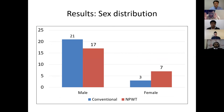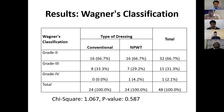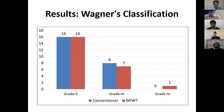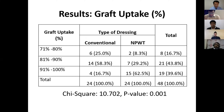According to Wagner's classification, this is how patients were diagnosed. More patients belong to Grade 2, with 16 members in Grade 2 and 15 members in Grade 3. Coming to graft uptake, one of the key objective parameters: 90 to 100% graft uptake is seen more in the negative pressure wound therapy group.